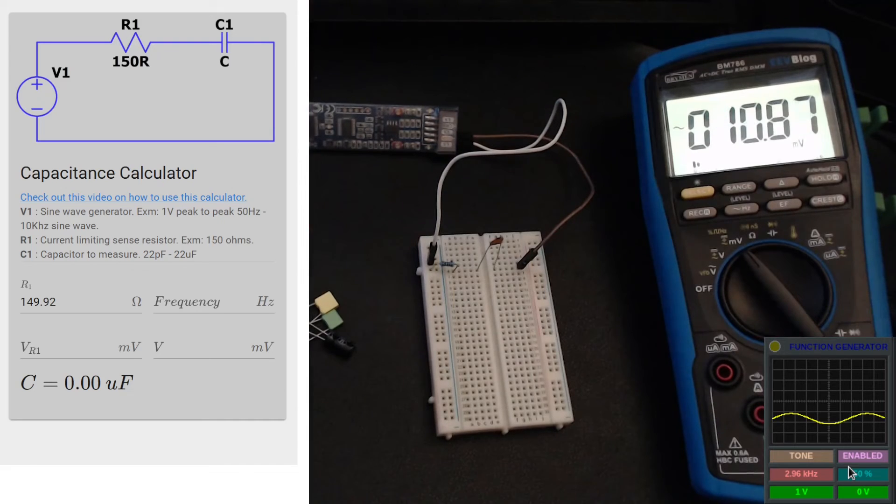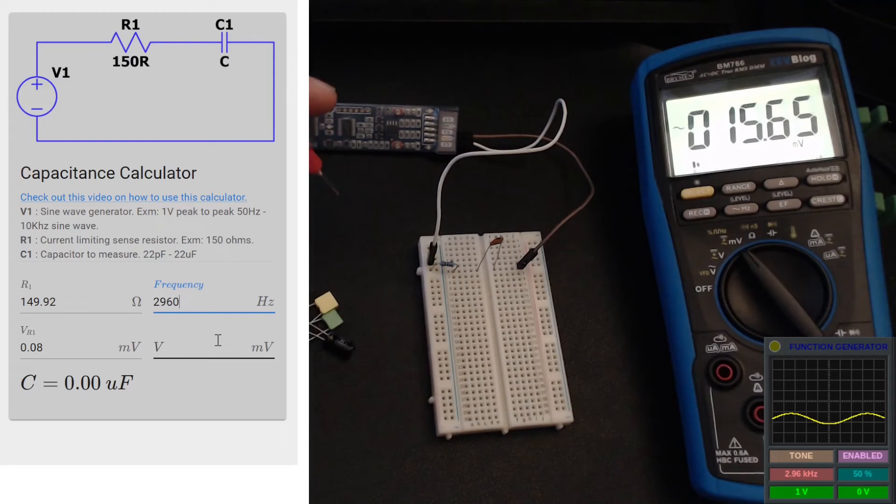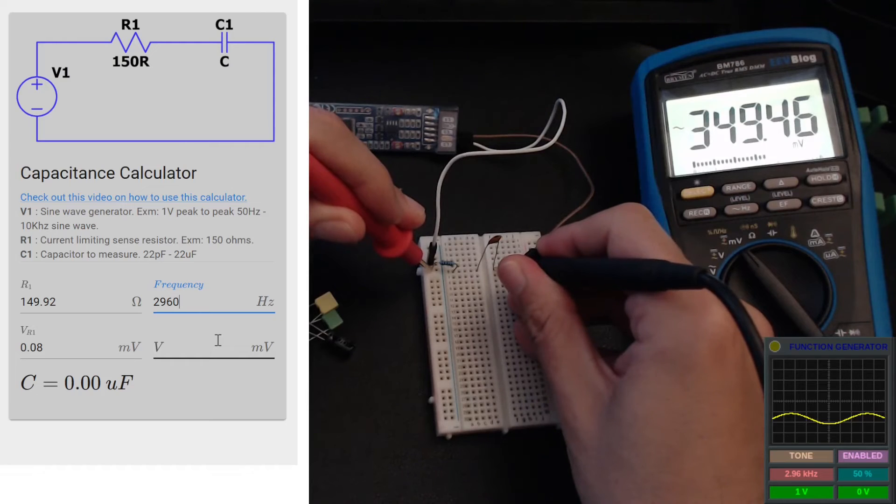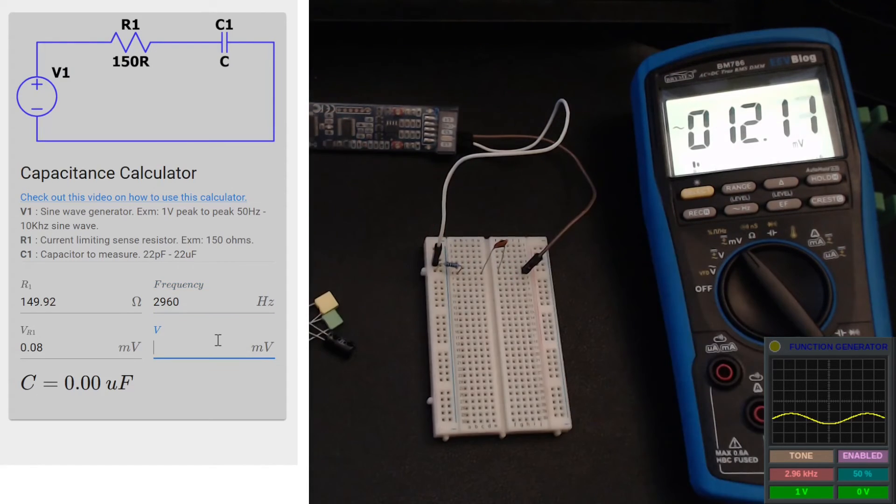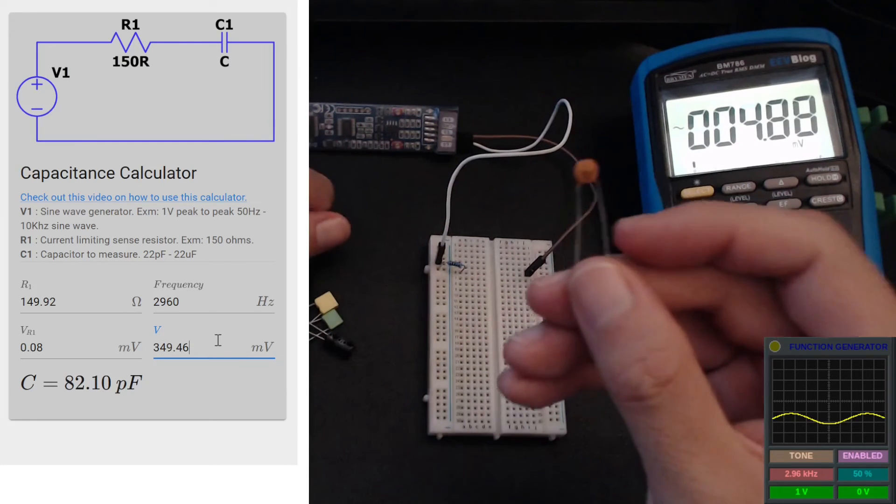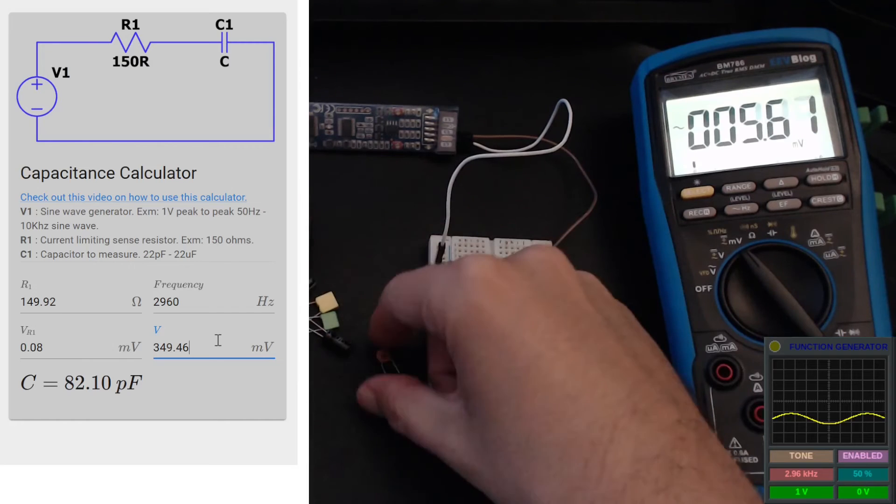So now let's see - we have 0.08 across the resistor, 0.08 millivolts, and our frequency is 2.96 kilohertz. Now let's measure the voltage across the resistor and the cap - 349.46. All right, so we are reading 82.10 picofarads and this is 82 picofarads cap, so that's pretty accurate.